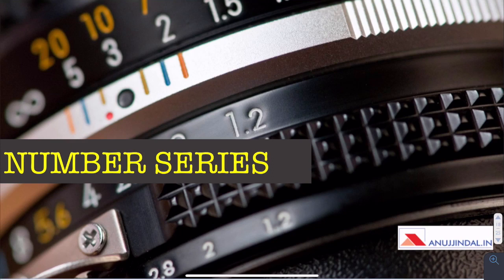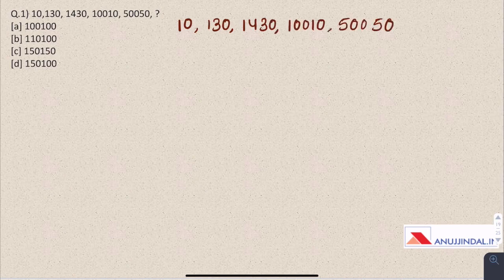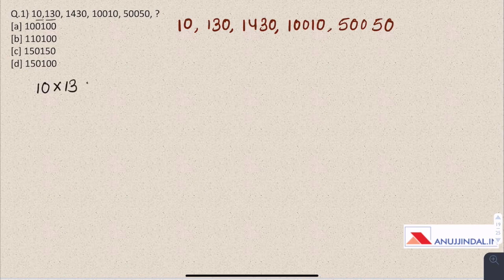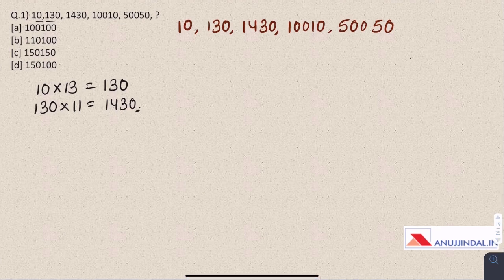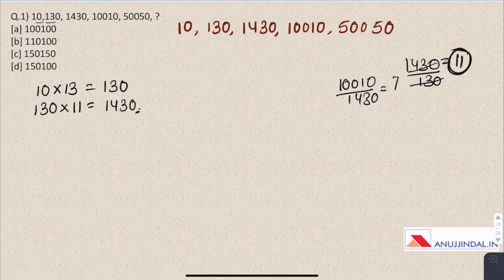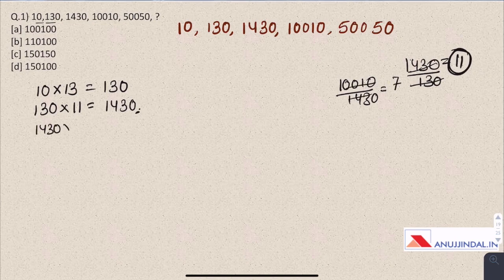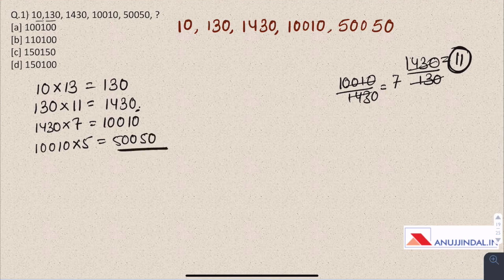Let us move forward to the questions. Question 1. So we have been given a number series and we have to find the next number in the sequence. When we start from the first number, we can see that the second number is 10 into 13 which gives 130, and the third number is 130 into 11 which is 1430. I divided 1430 by 130 to find out 11, and when we divide 10010 by 1430, we see that comes out to be 7. So 1430 into 7 equals 10010, and 10010 multiplied by 5 is 50050. Now we have to find the next number in the series.